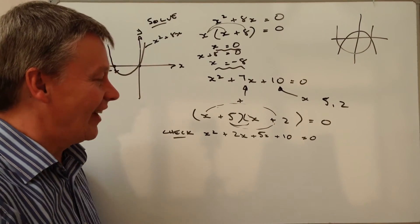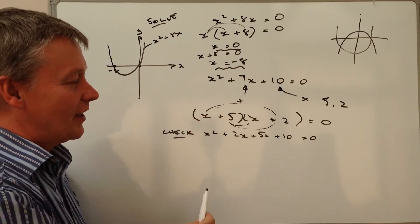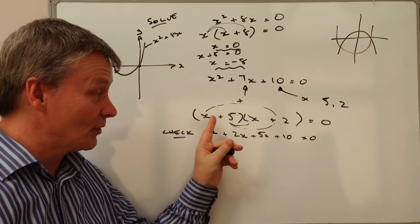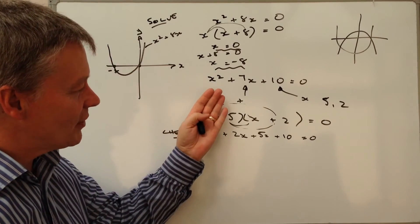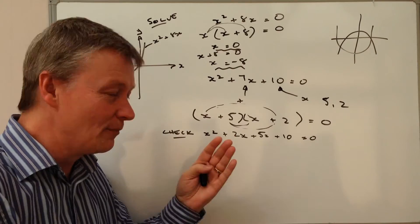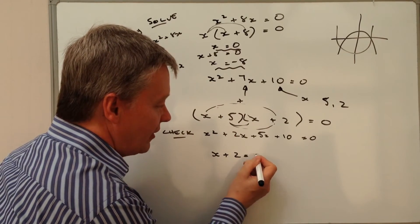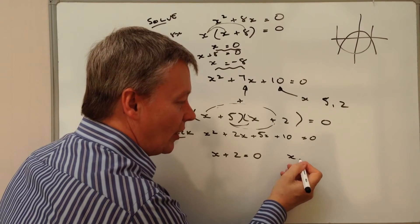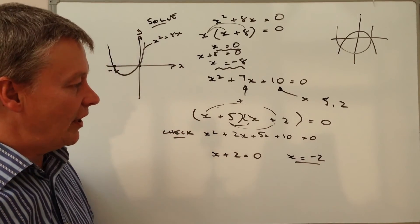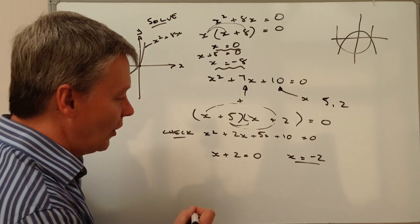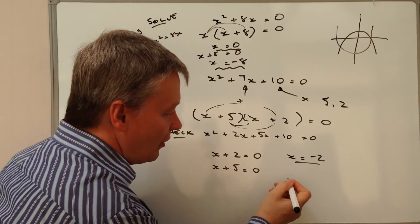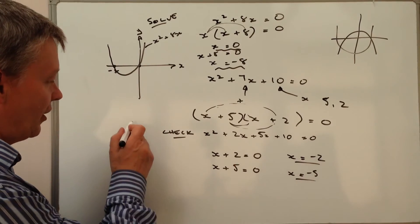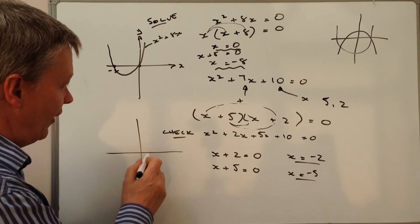We need to work out the values of x again. It's exactly the same as before. We're saying x plus 5 multiplied by x plus 2 equals zero. If x plus 2 equals zero, then if I take 2 from both sides, x equals minus 2 is my first value for this equation. For this one, I've got x plus 5 equals 0, so that means x equals minus 5.